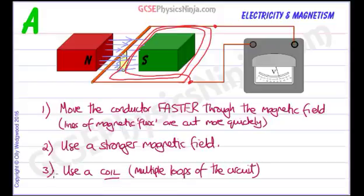So there are three ways of increasing the induced EMF when a conductor is cutting through the lines of magnetic flux.